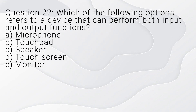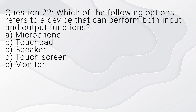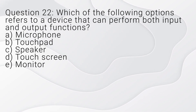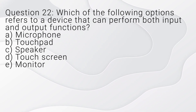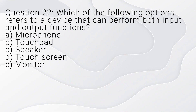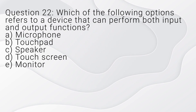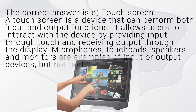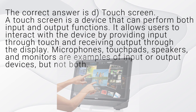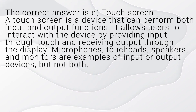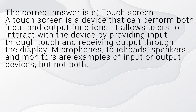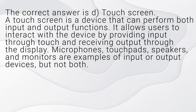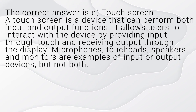Question 22. Which of the following options refers to a device that can perform both input and output functions? A. Microphone. B. Touchpad. C. Speaker. D. Touchscreen. E. Monitor. The correct answer is D, touchscreen. A touchscreen is a device that can perform both input and output functions. It allows users to interact with the device by providing input through touch and receiving output through the display. Microphones, touchpads, speakers, and monitors are examples of input or output devices, but not both.